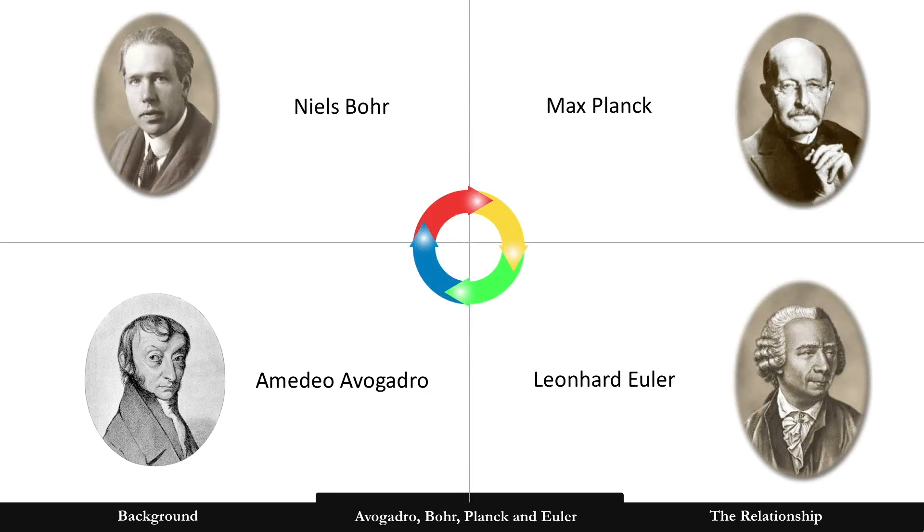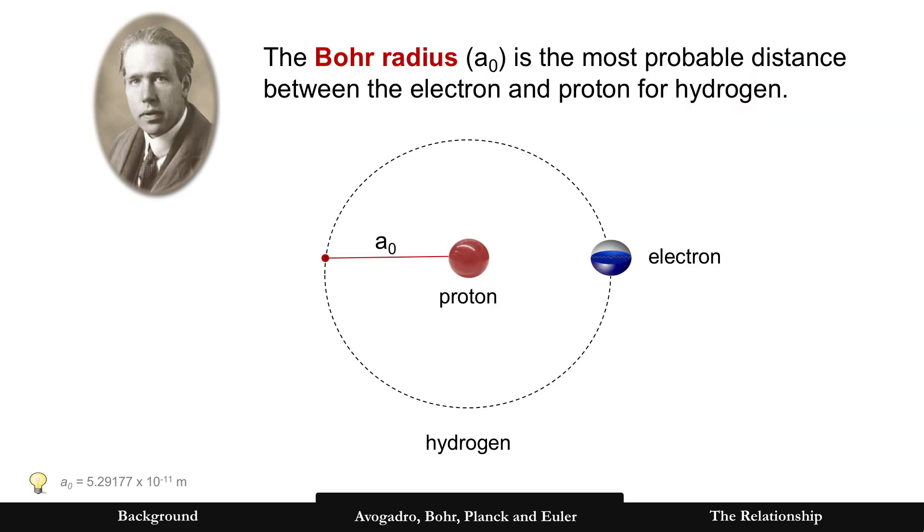But before we get into the relationship, we have to talk about the three constants. We'll start with Bohr. The Bohr radius (a₀) is the most probable distance between the electron and proton for a hydrogen. See the red line, there's the radius, and see the constant.